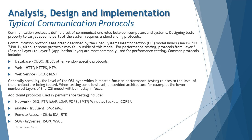Although some protocols may fall outside the OSI model, for performance testing, protocols from Layer 5 — the Session Layer — to Layer 7 — the Application Layer — are most commonly used. You need to identify and work upon these layers in a multi-tier architecture to determine what kind of protocols are used at each specific layer.